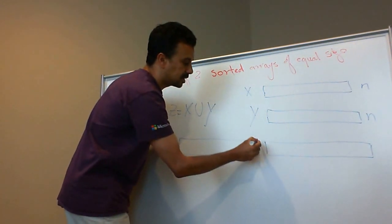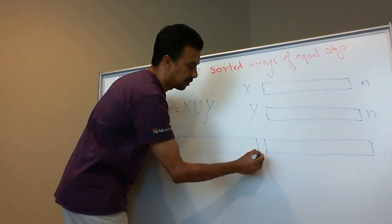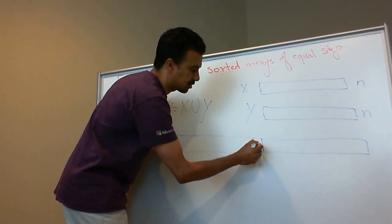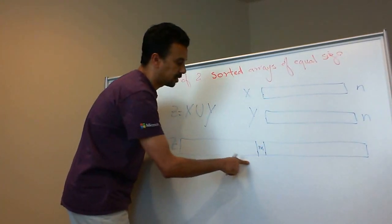Then the median, by definition, would be in the middle. So the median with value m would be in the middle.